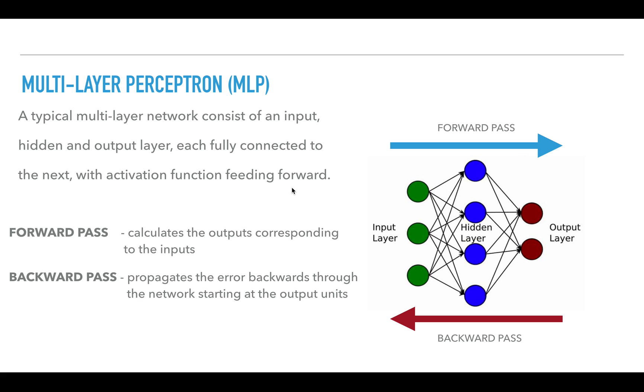So forward pass calculates the output corresponding to the inputs. For each training data we give in the input layer, it calculates a score for each neuron. Then the score is given to the activation function, after which we get the output value for each neuron.